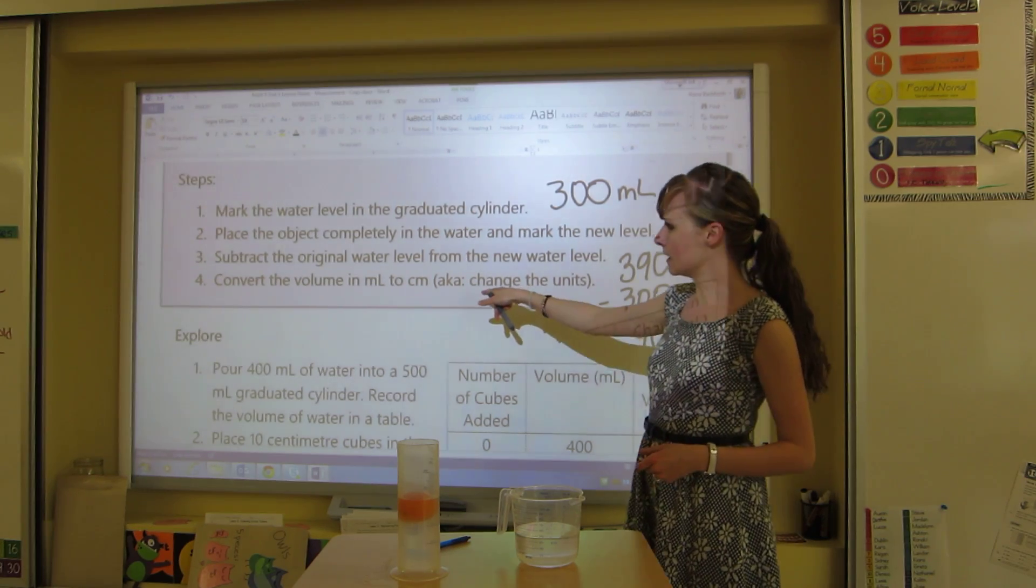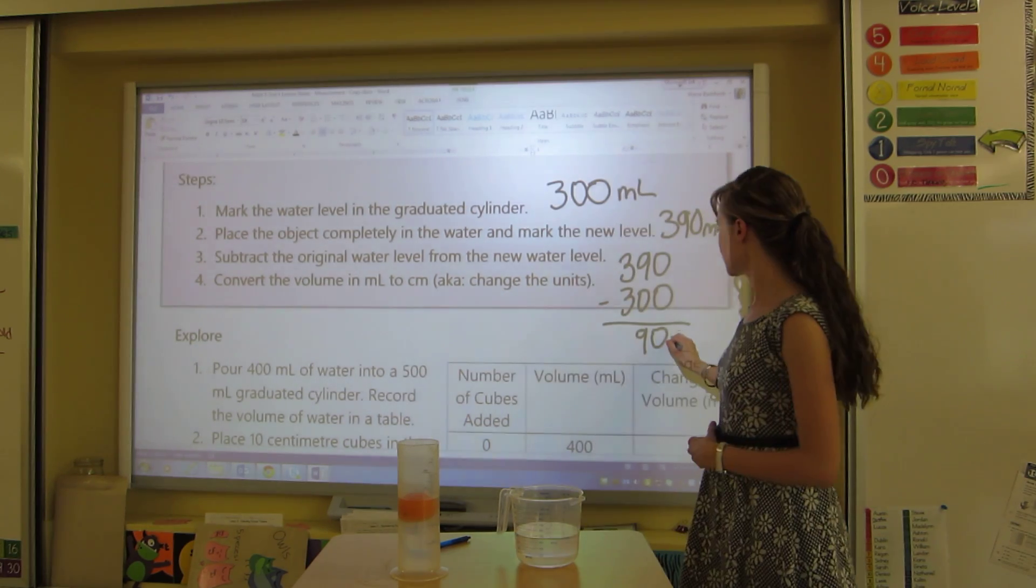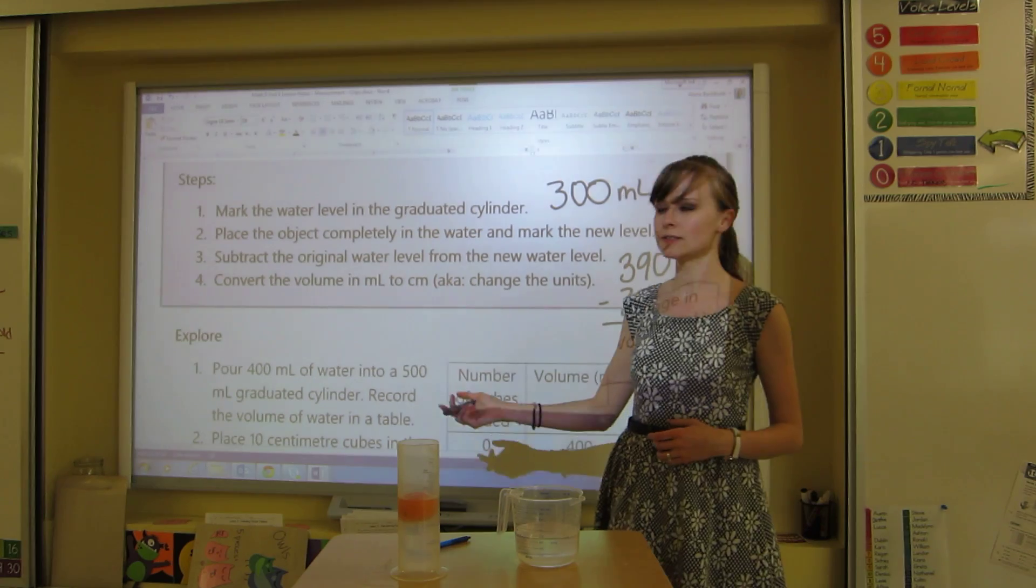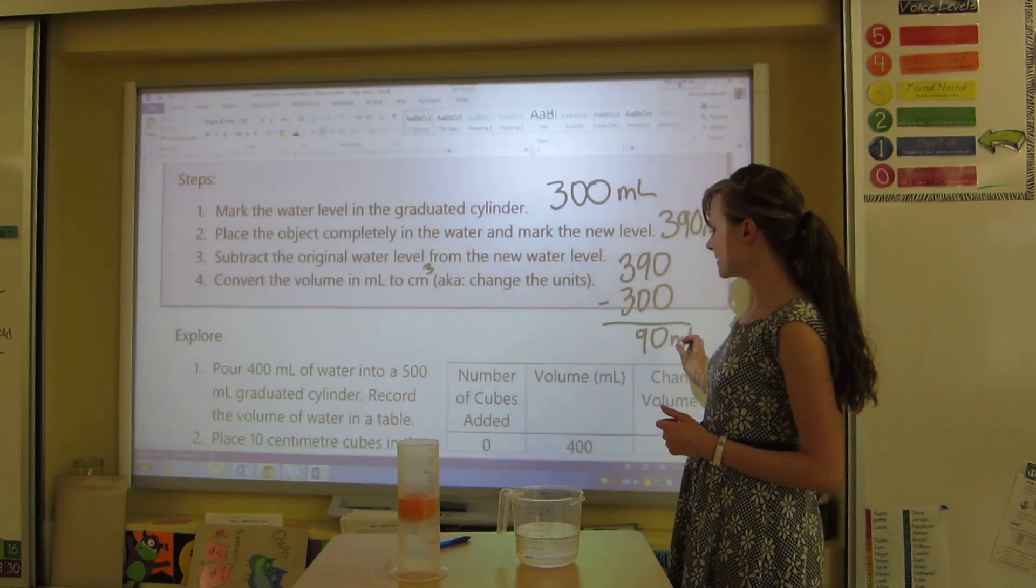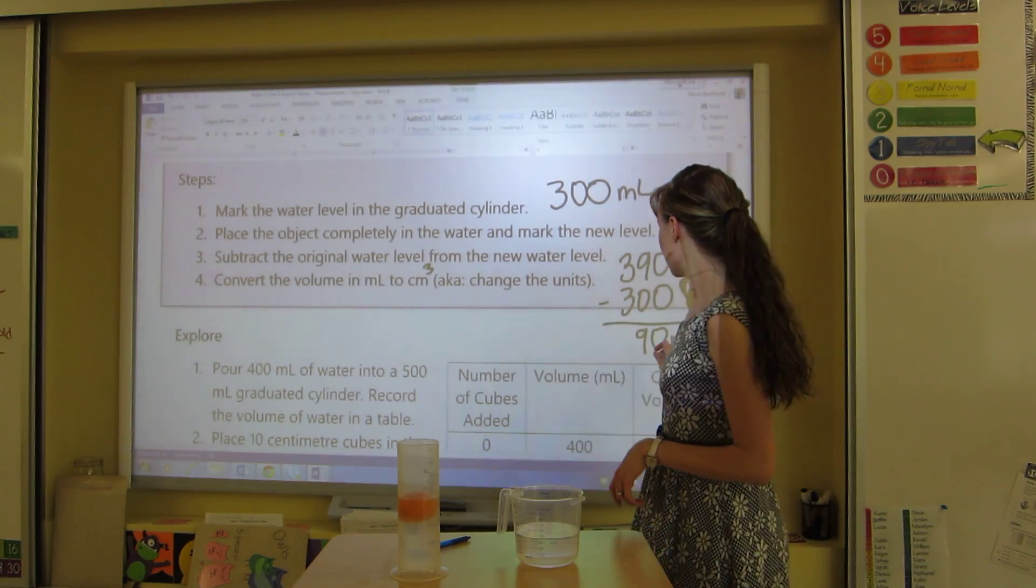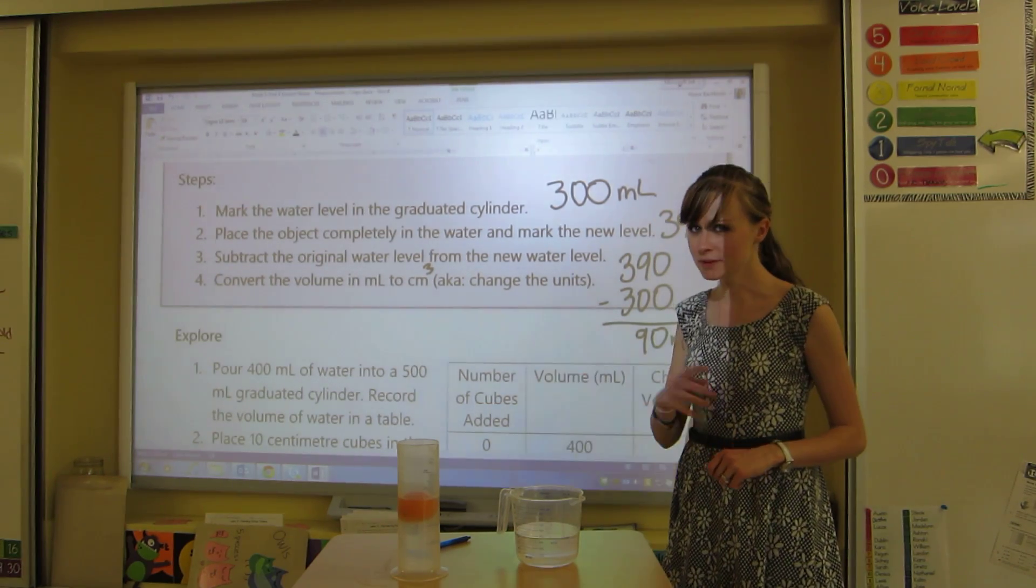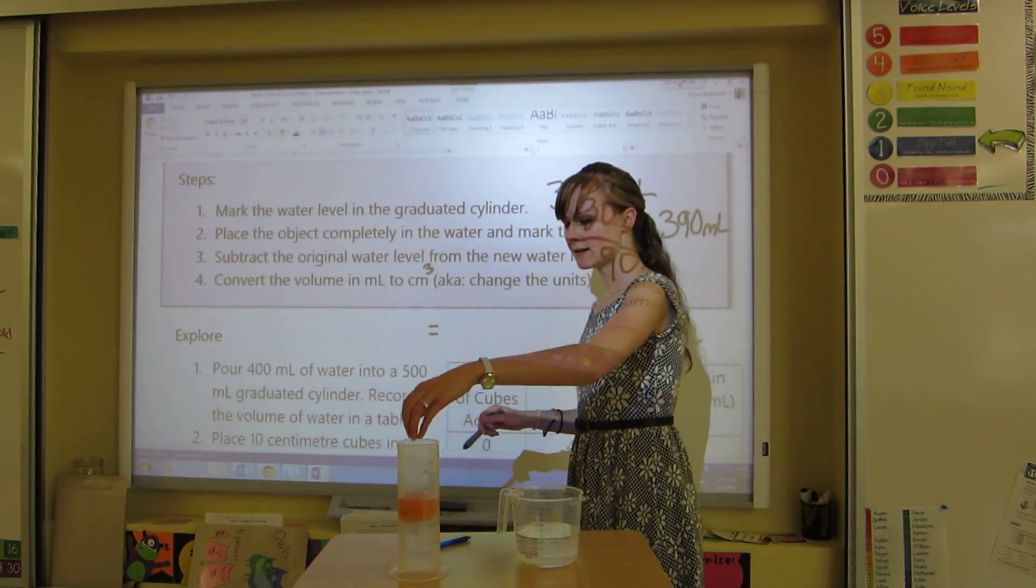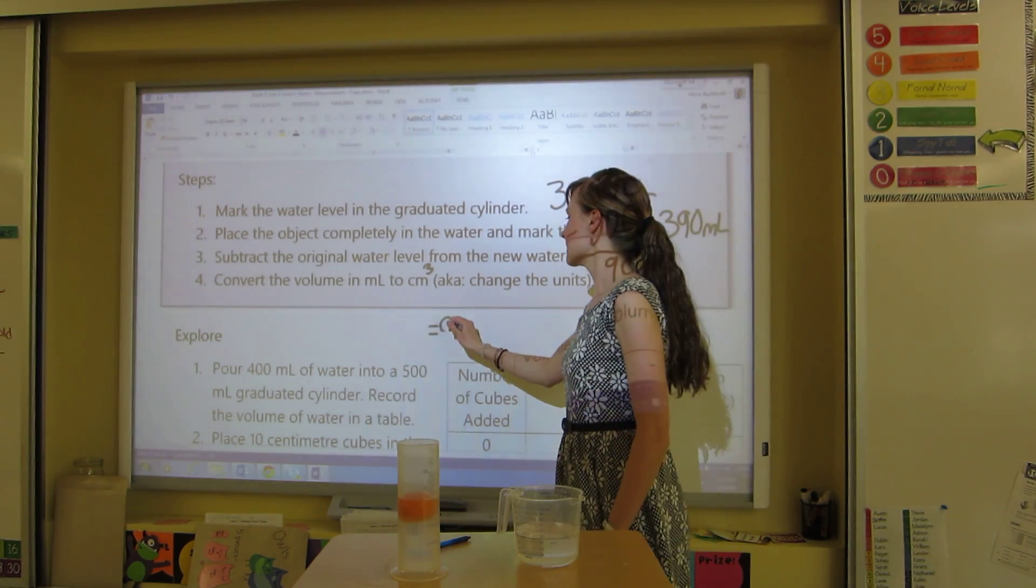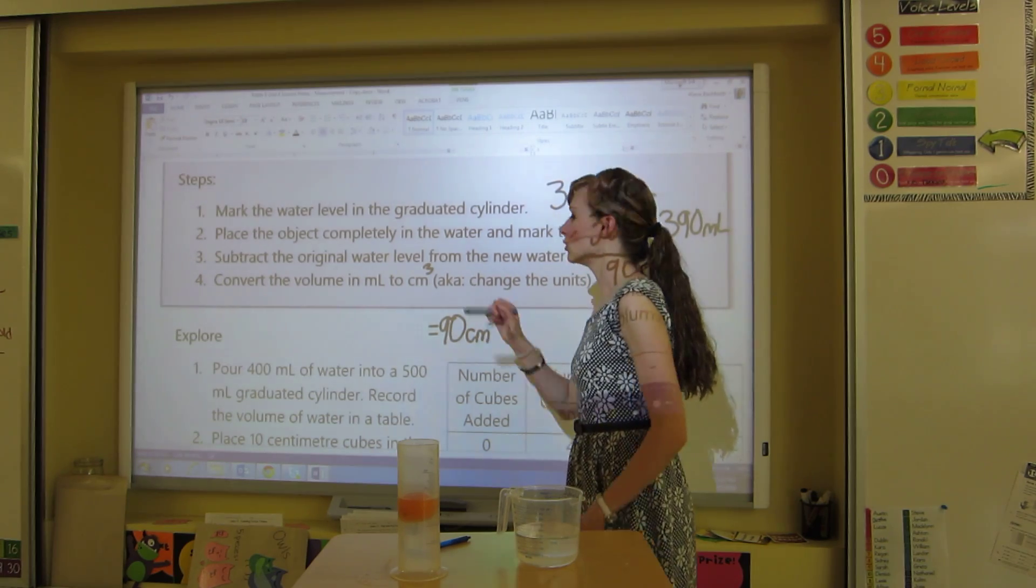Okay, so the last thing that I need to do is convert my milliliters to centimeters cubed, and this should say cubed right there. And so basically, that's really easy in this case. You just take that mL, pull it off, and put cm³ in the front. So that means that my orange is 90 centimeters cubed.